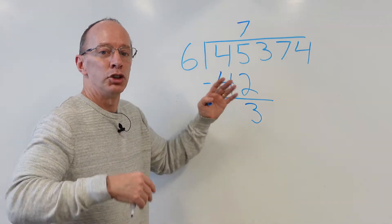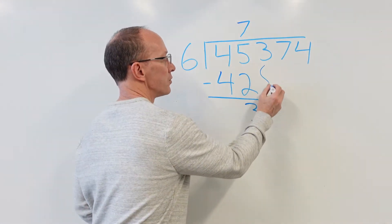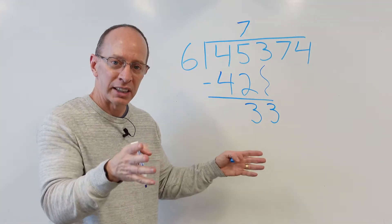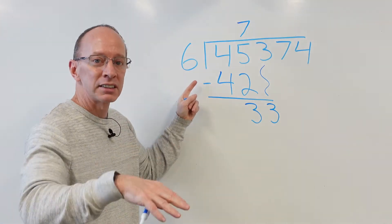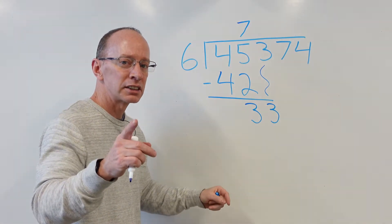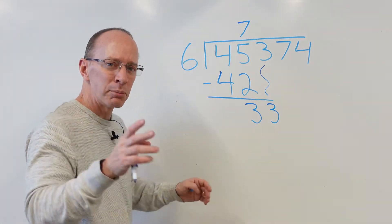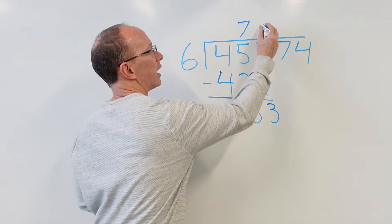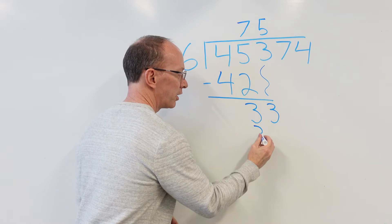Now what do we do? We drop the number down. Put that 3 here. You can add your own sound effects — that makes math kind of cool. Now we go back to step 1. How many times can I put 6 into 33? 6 times 4 is 24. 6 times 5 is 30. See where multiplication facts come in handy? You've got to know them. So 6 times 5 — put the 5 right here. You multiply.